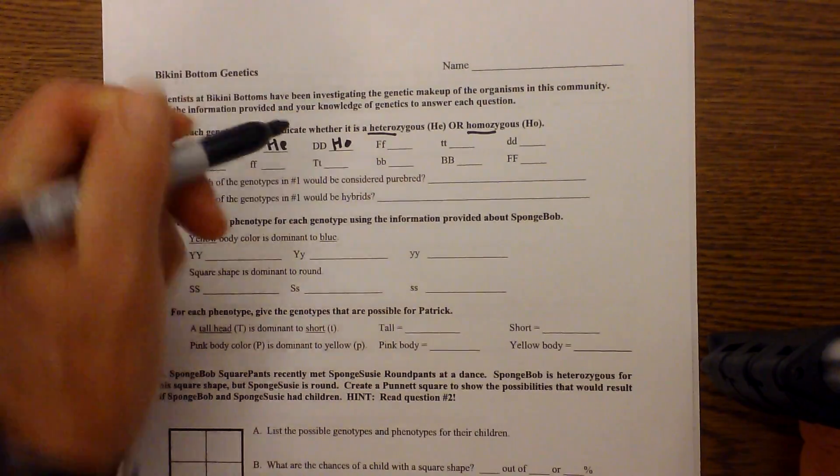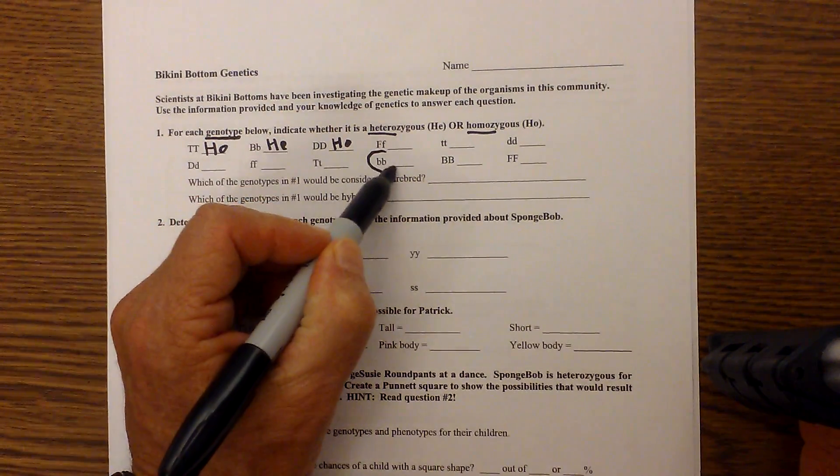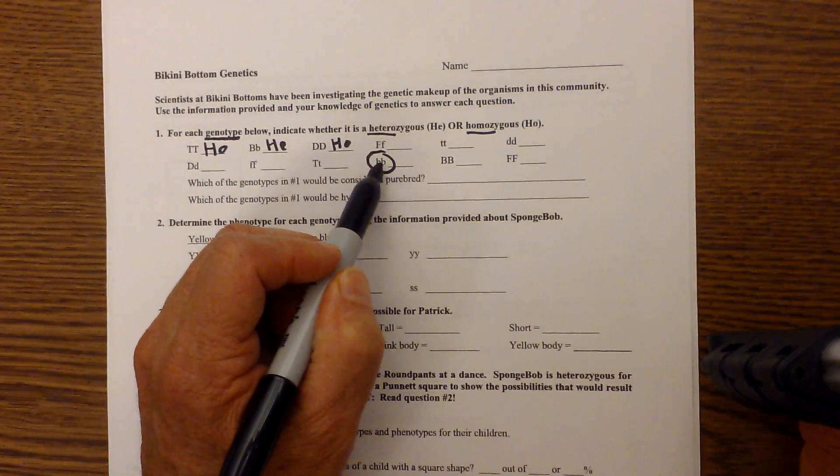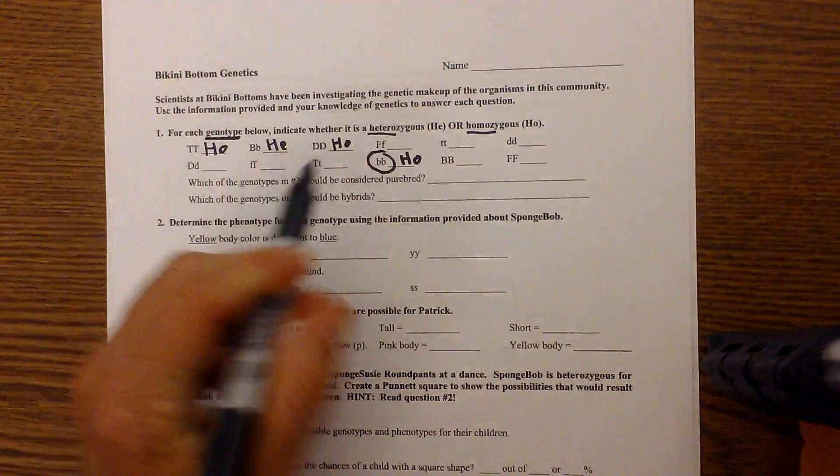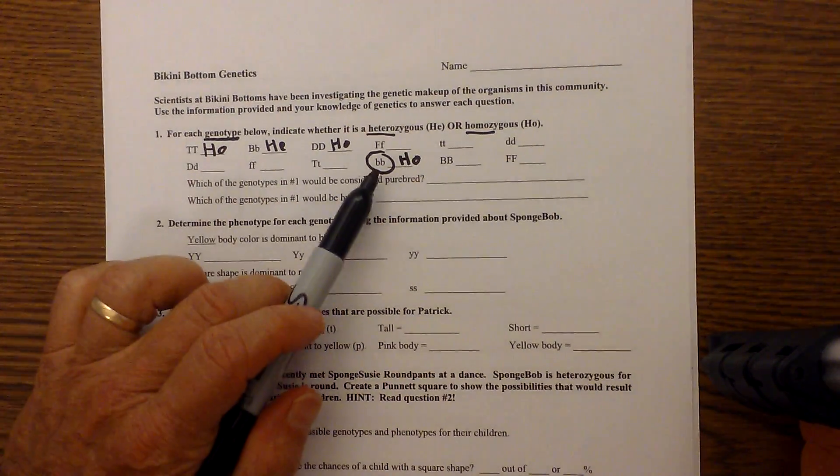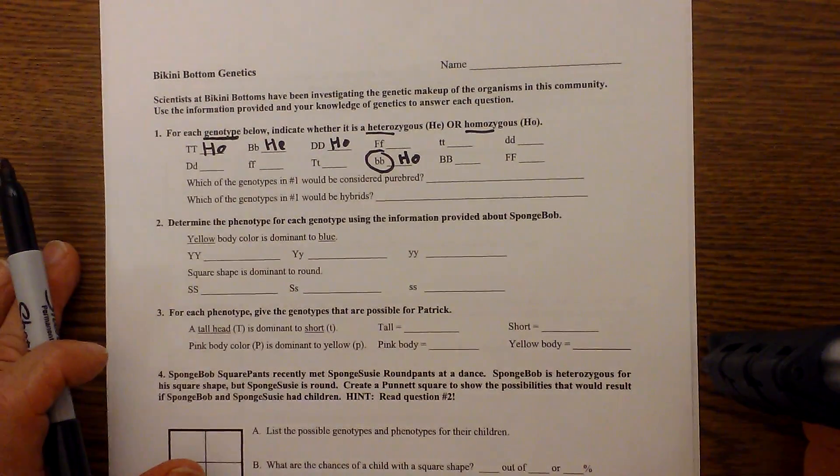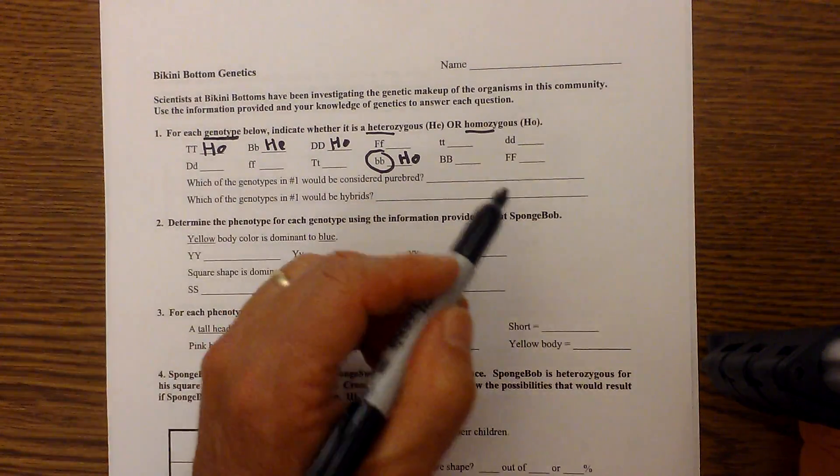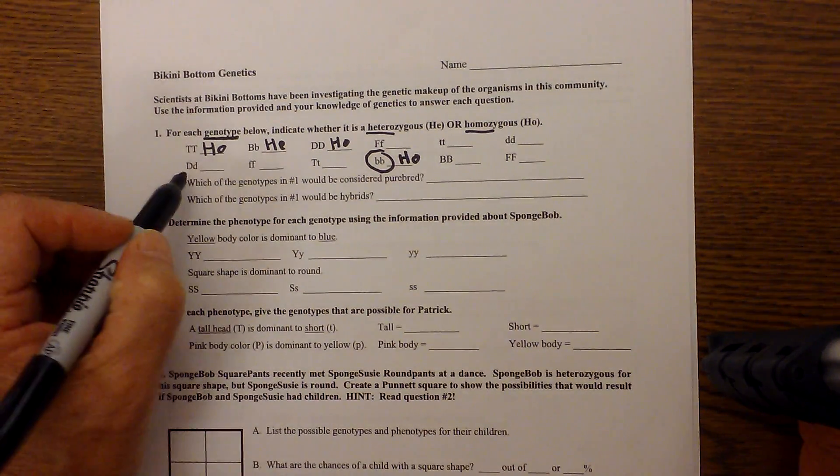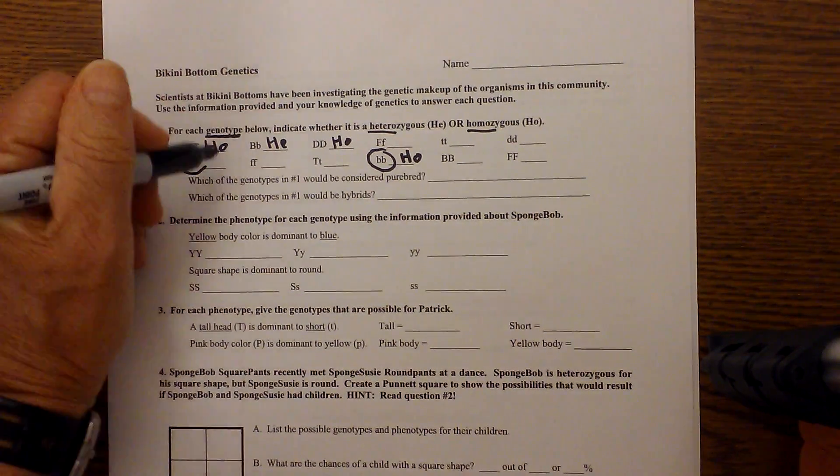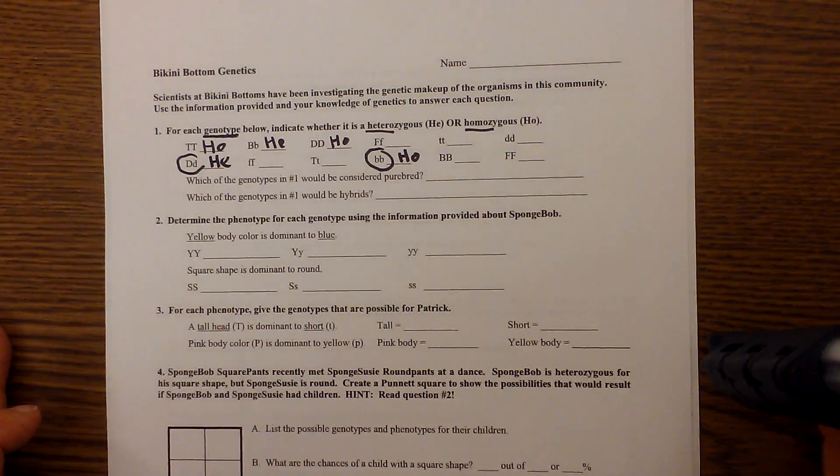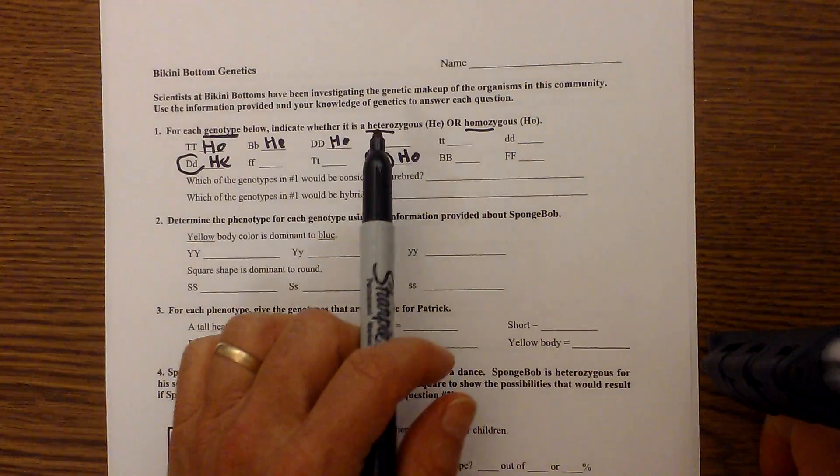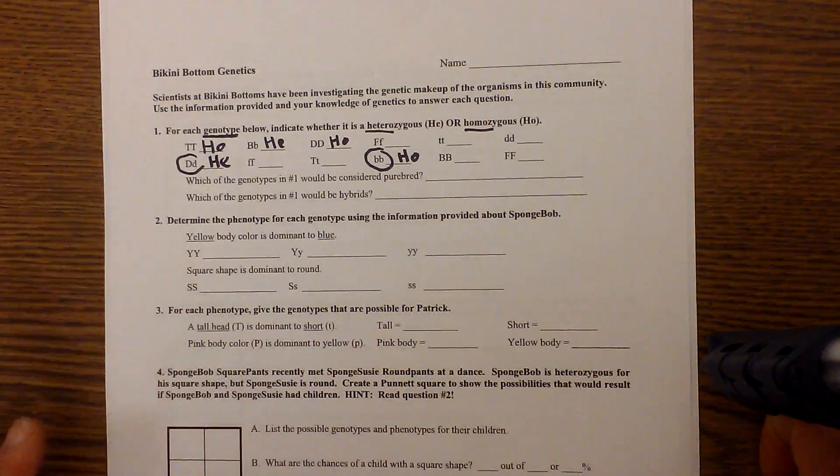This would be homozygous. How about this one right here? You have two lowercase b's and it is homozygous and this would technically be called a homozygous for the recessive trait. And then let's see here is one more right here. This would be heterozygous. So that's just kind of a warm up for the Punnett squares in trying to figure out the difference between heterozygous and homozygous.